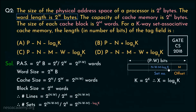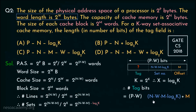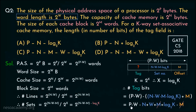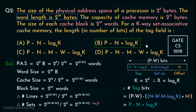To find the number of tag bits, we subtract the set number bits and offset bits from the physical address bits: (p minus w) minus (n minus w minus m minus log k base 2). The negative sign changes all signs in the bracket: minus w becomes plus w, minus m becomes plus m, and minus log k base 2 becomes plus log k base 2. The minus m and plus m cancel out, and the plus w and minus w cancel out. Finally, we are left with p minus n plus log k base 2 — that is the number of tag bits. Therefore, option B is the correct choice.